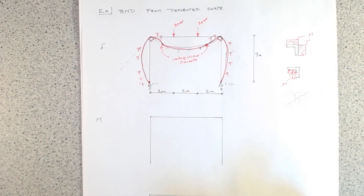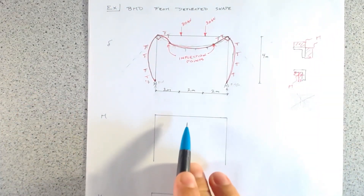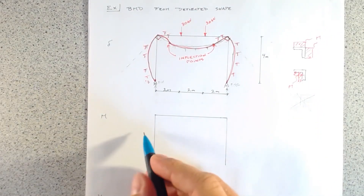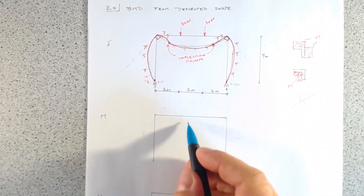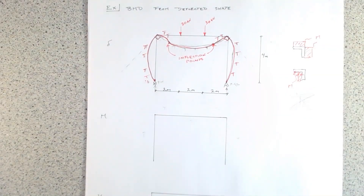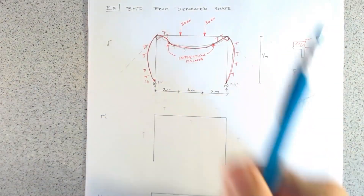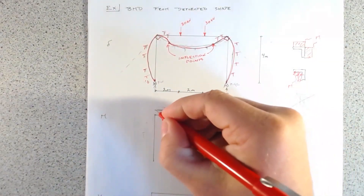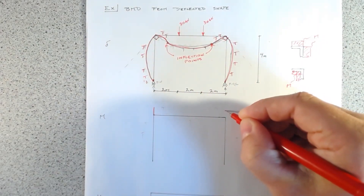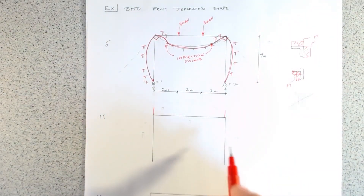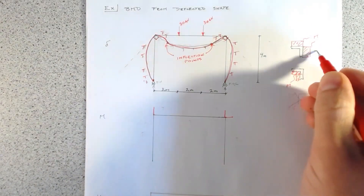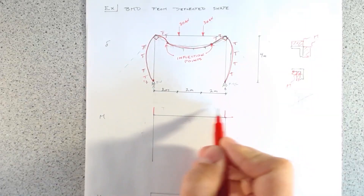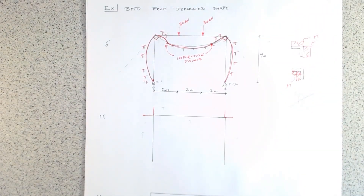Now looking at the moment diagram: we have tension here on the columns and tension on the top of the beam near the corners. We know if we have tension on the top, the moment diagram has to be plotted on the top. On the sides — the columns — it has to be equal and opposite, so if the tension is on the outside, we mark the moment on the outside.